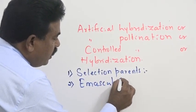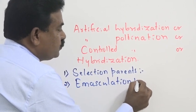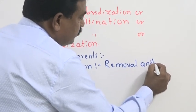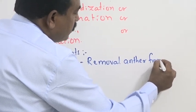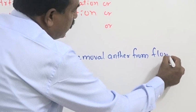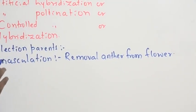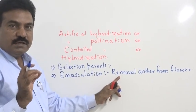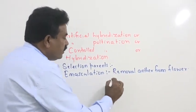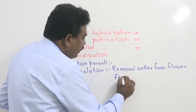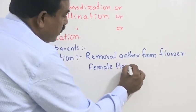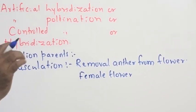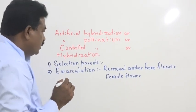After that, to make one plant, especially female, we go for emasculation. Removal of anther from flower is called emasculation. Where anther or stamen is removed from the forceps. As a result, that flower becomes female flower. Because, the male part, that is stamen, androecium units, we destroyed or anther we removed.